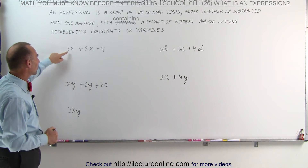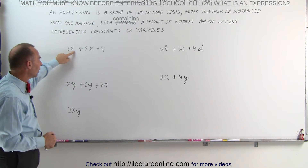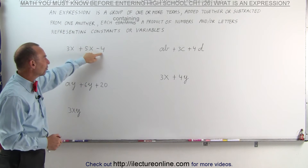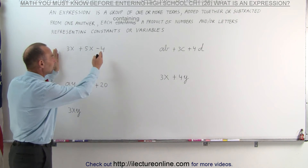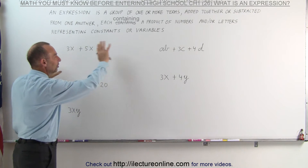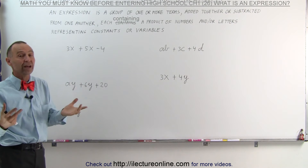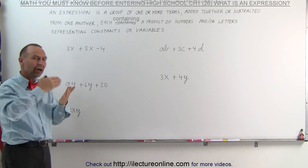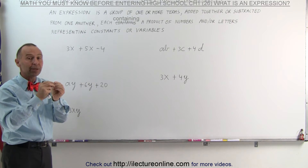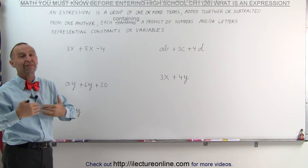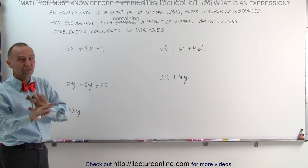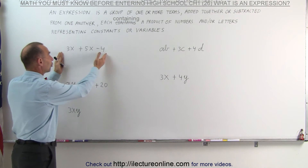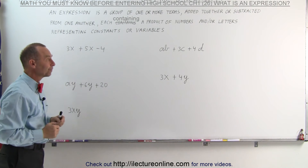So here we have 3 times some unknown variable, plus 5 times some unknown variable, minus 4. That forms an expression. Notice that none of these expressions have equal signs. Whenever there's an equal sign, there will be a left side, a right side, and an equal sign in the middle — that means you have an equation. An expression is not an equation; it's simply a group of terms with no equal sign.